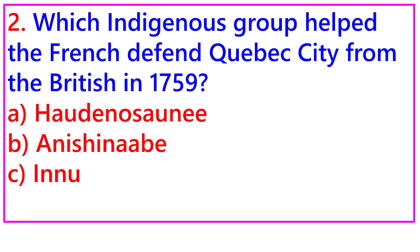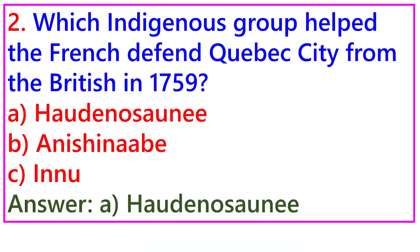Question 2: Which indigenous group helped the French defend Quebec City from the British in 1759? A. Haudenosaunee, B. Anishinaabe, C. Inou. Answer: A. Haudenosaunee.